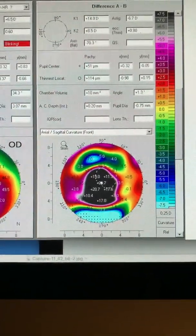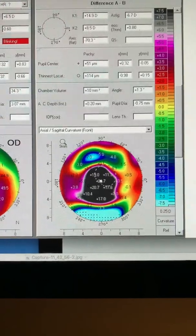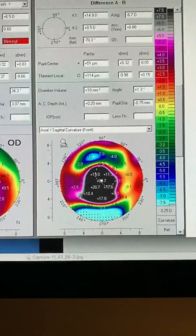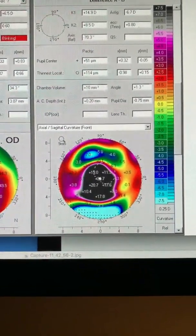Of course, this is the X factor of cross-linking since the laser ablation itself can account for about 4 to 5 diopters of normalization.